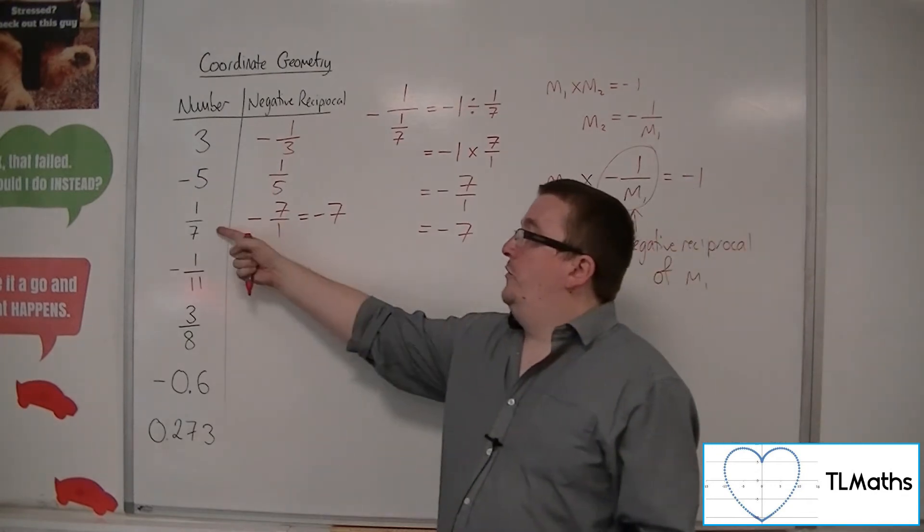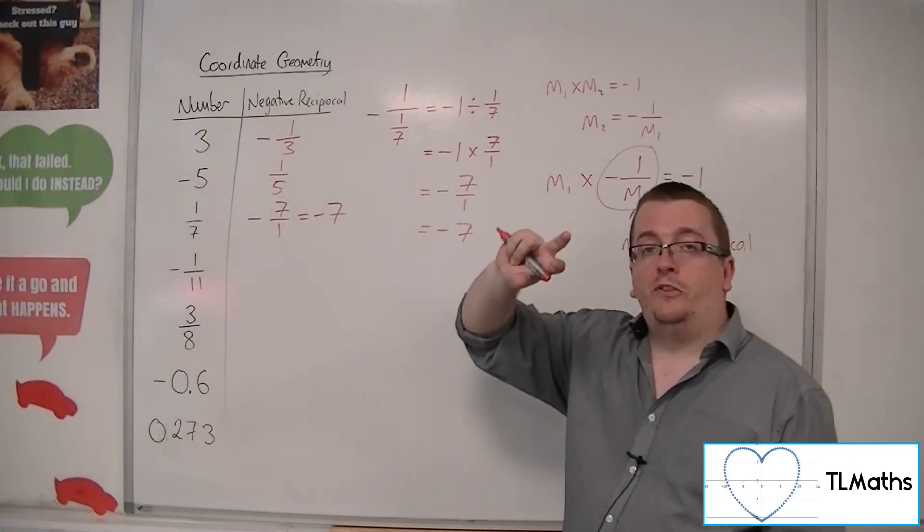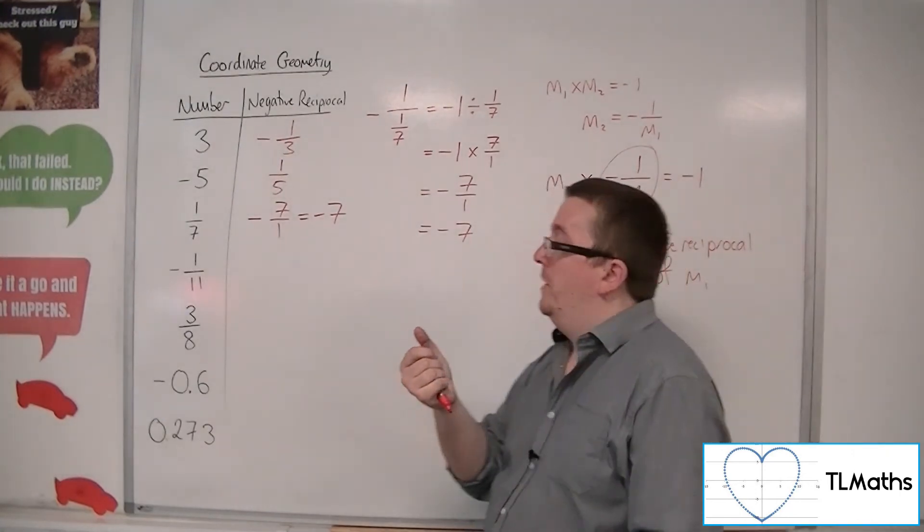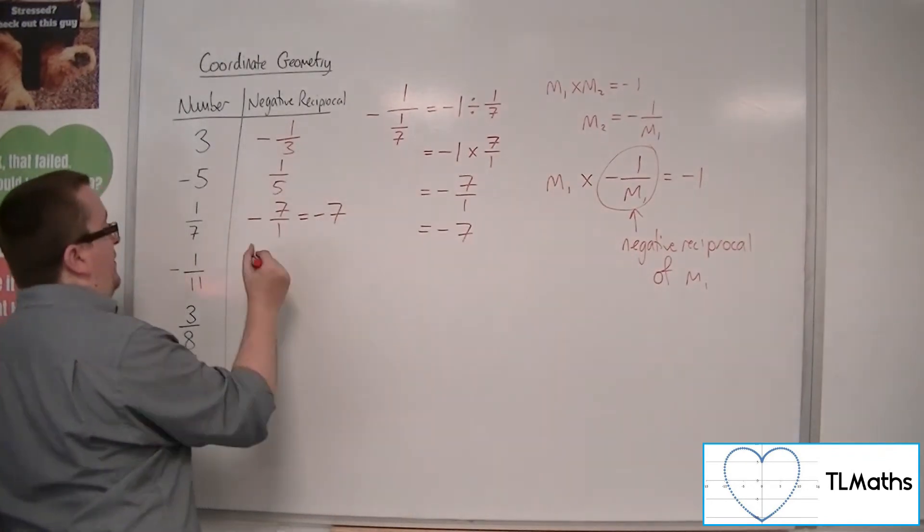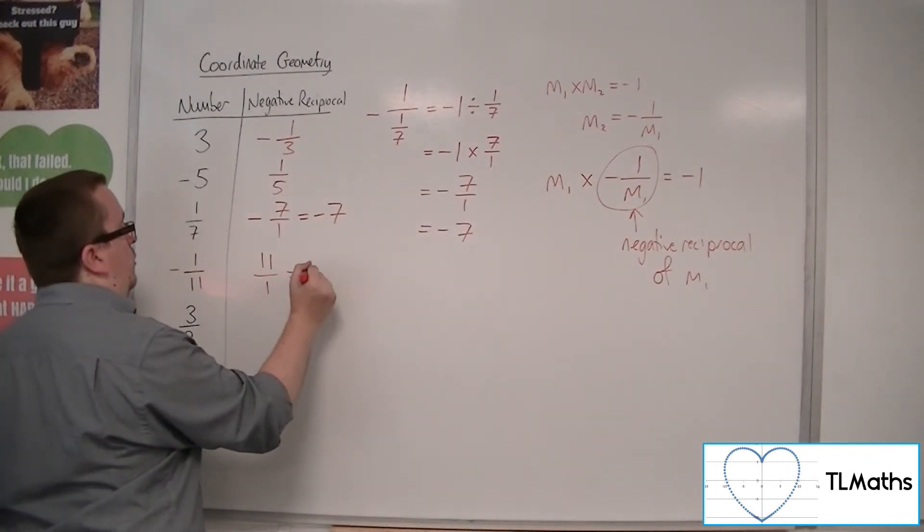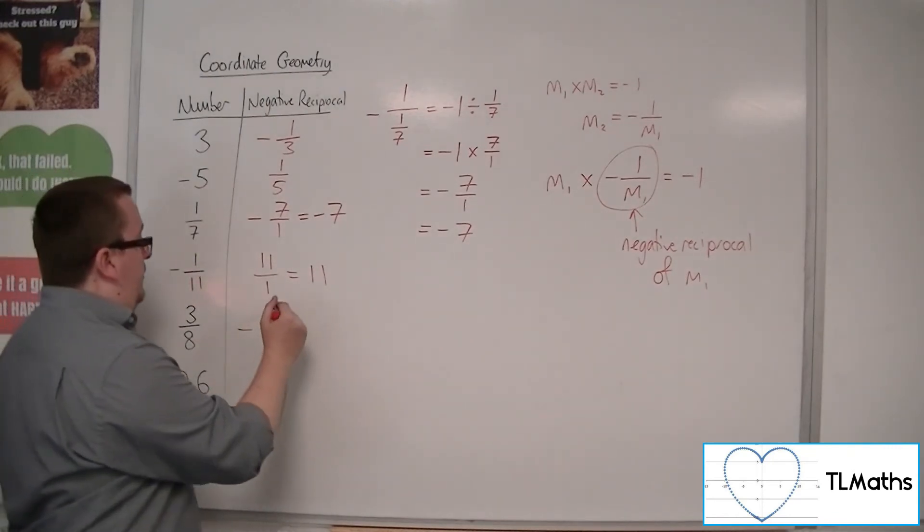So when you're doing a fraction, you just make sure that you flip it. The denominator becomes the numerator. The numerator becomes the denominator. So minus 1 over 11 will become positive 11 over 1, or just 11. 3 eighths will become minus, flip the fraction, 8 thirds.